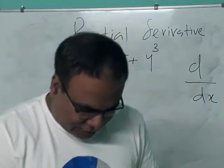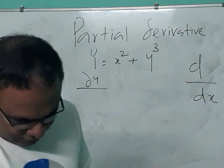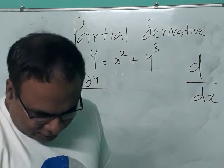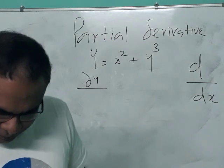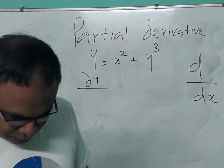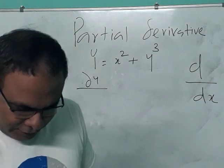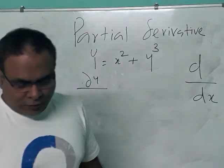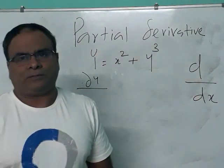The derivative of a constant is 0. That is one important thing you need to understand — the derivative of a constant is 0.